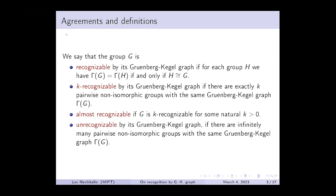We say that group G is recognizable by its Gruenberg-Kegel graph if there is only one group H with the same Gruenberg-Kegel graph, k-recognizable if there are exactly k pairwise non-isomorphic groups with the same Gruenberg-Kegel graph, almost recognizable if G is k-recognizable for some natural k, and unrecognizable if there are infinitely many pairwise non-isomorphic groups with the same Gruenberg-Kegel graph.